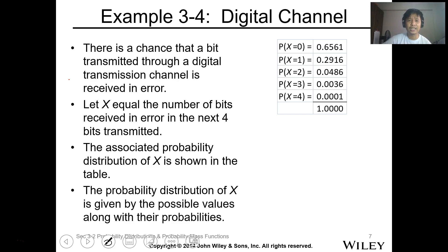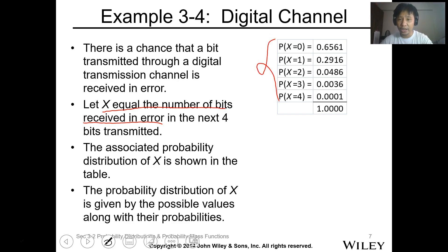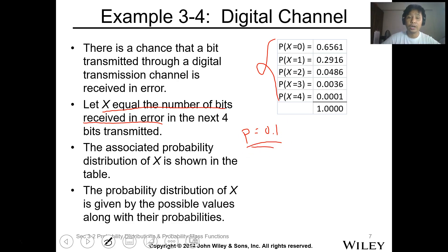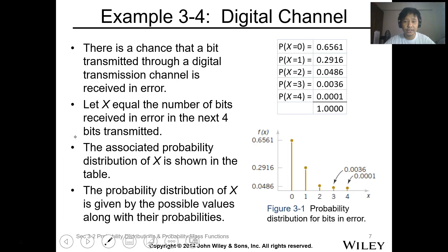There is a chance that a bit transmitted through a digital transmission channel is received in error, and X equals the number of bits received in error in the next four bits transmitted. The associated probability distribution of X is shown in the table. The probability of failure is 0.1, so the probability of zero failures is approximately 0.6561 — that is (0.9)^4 — since the probability of success is 0.9.